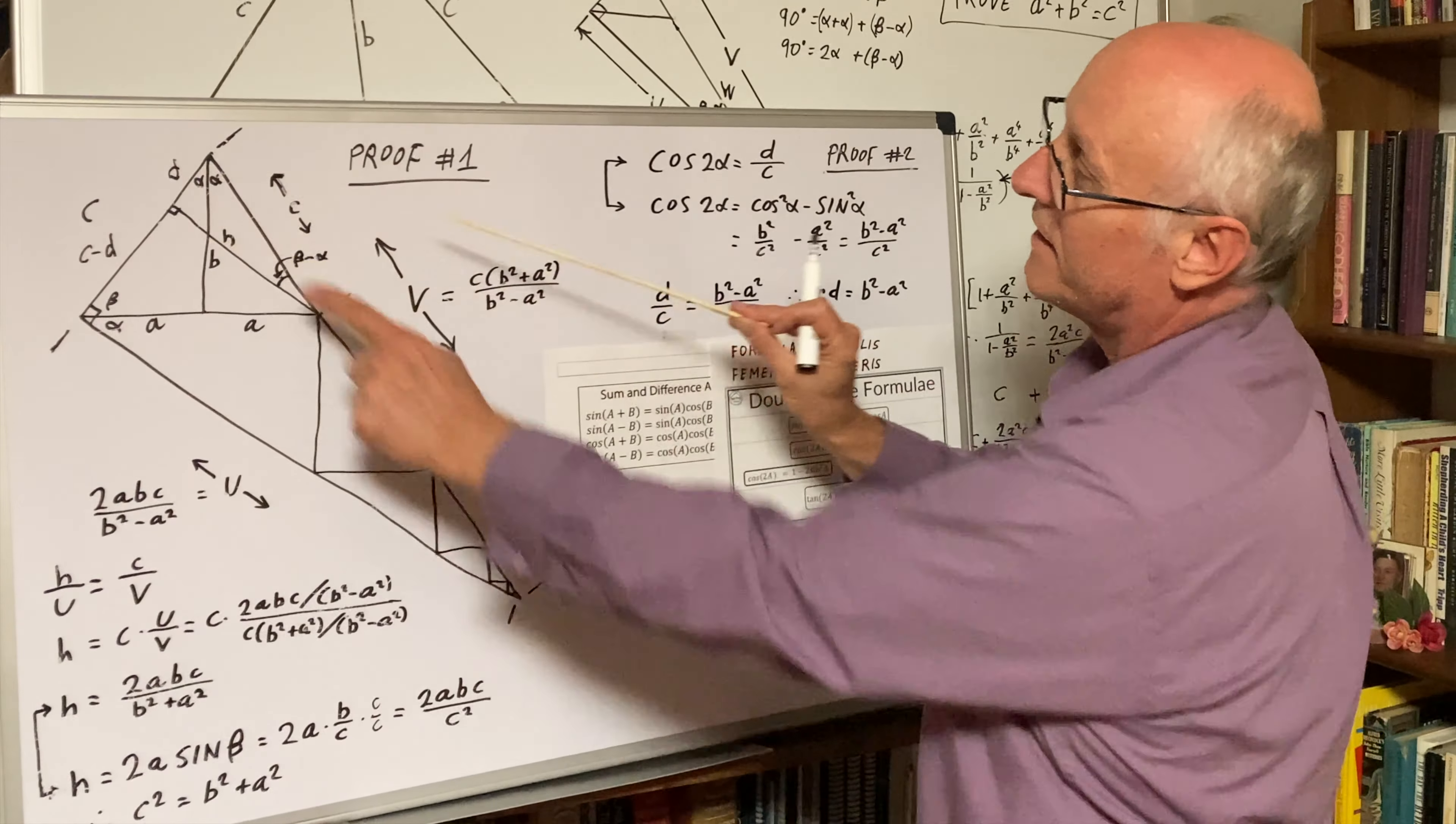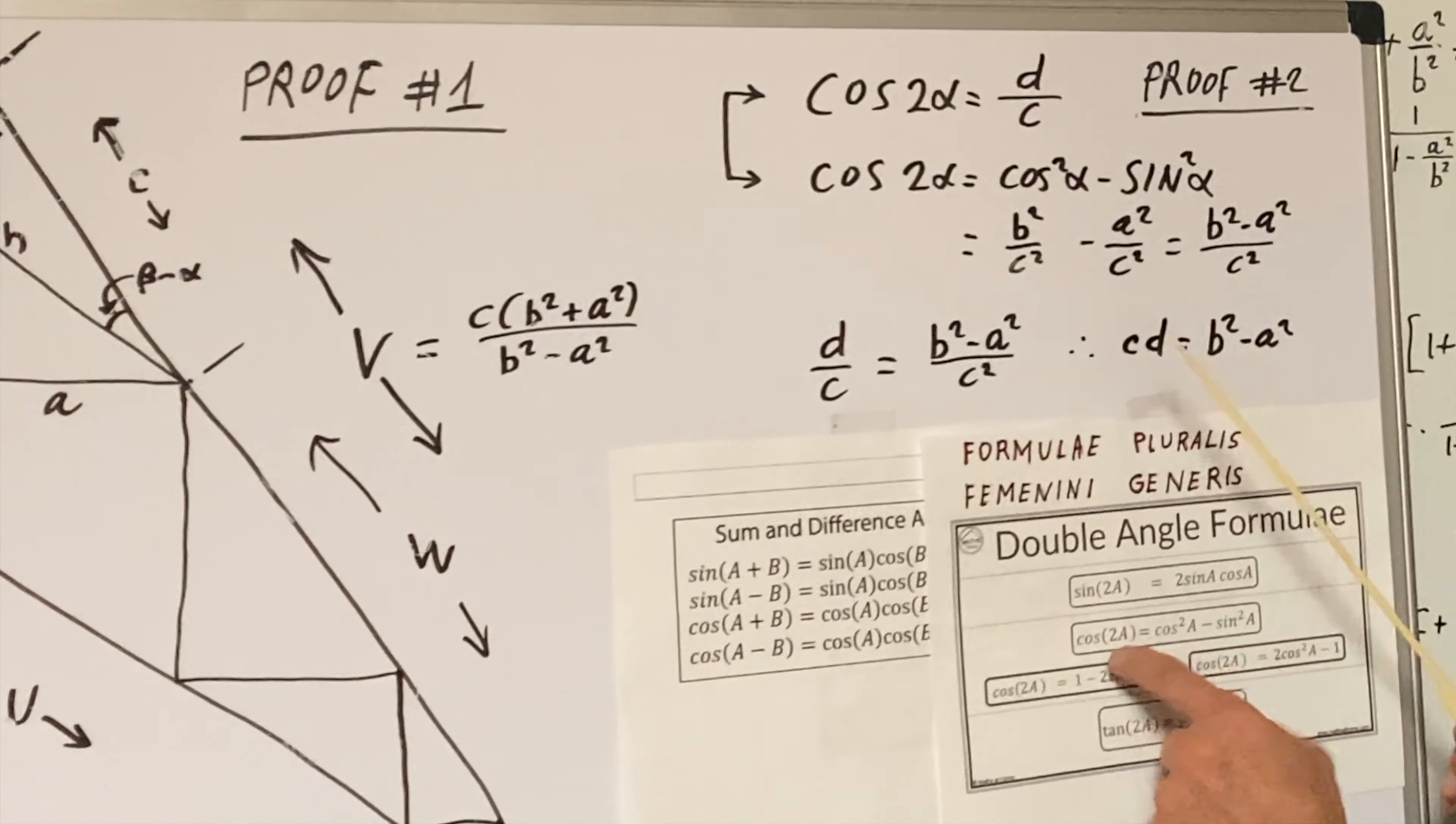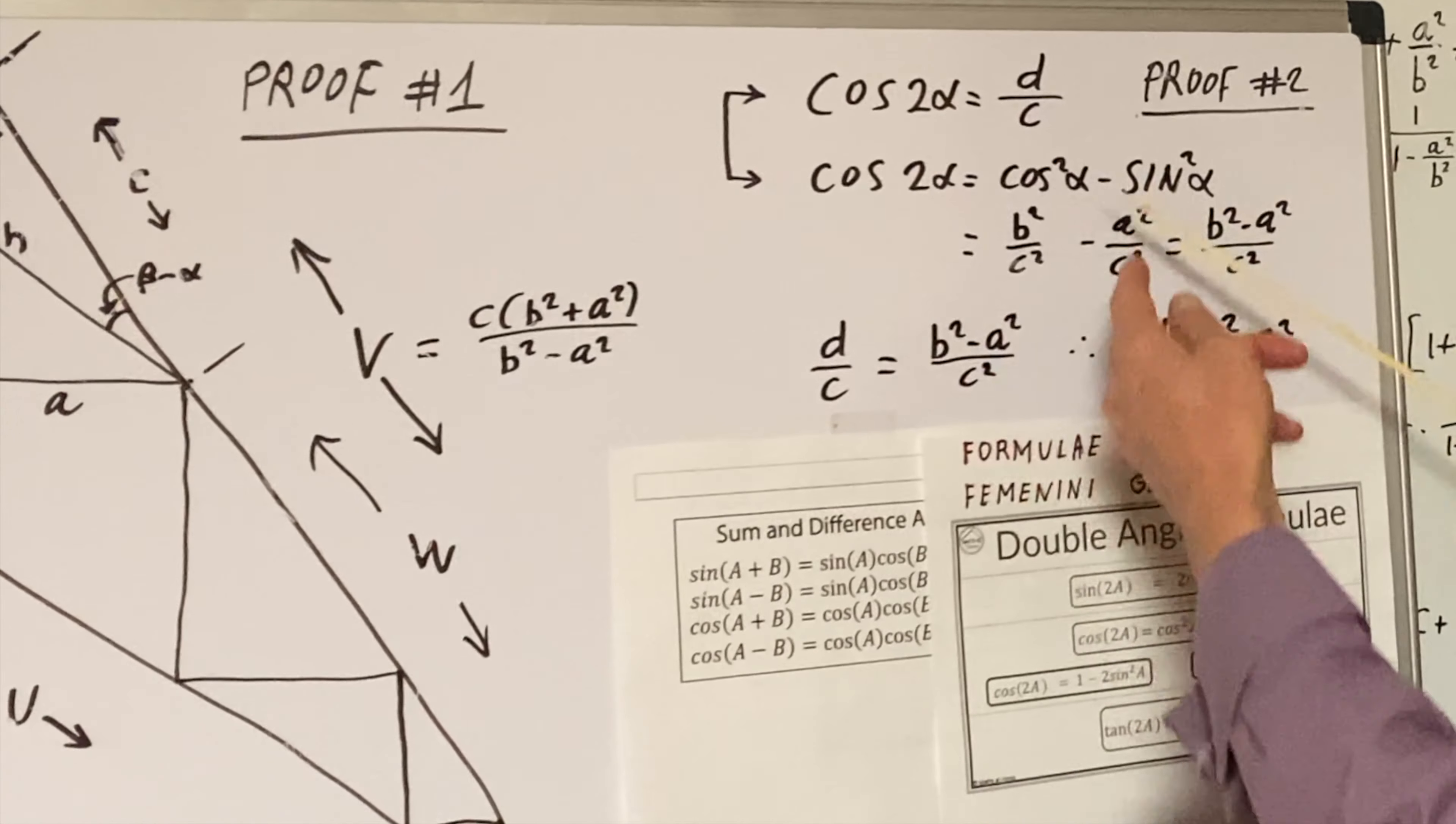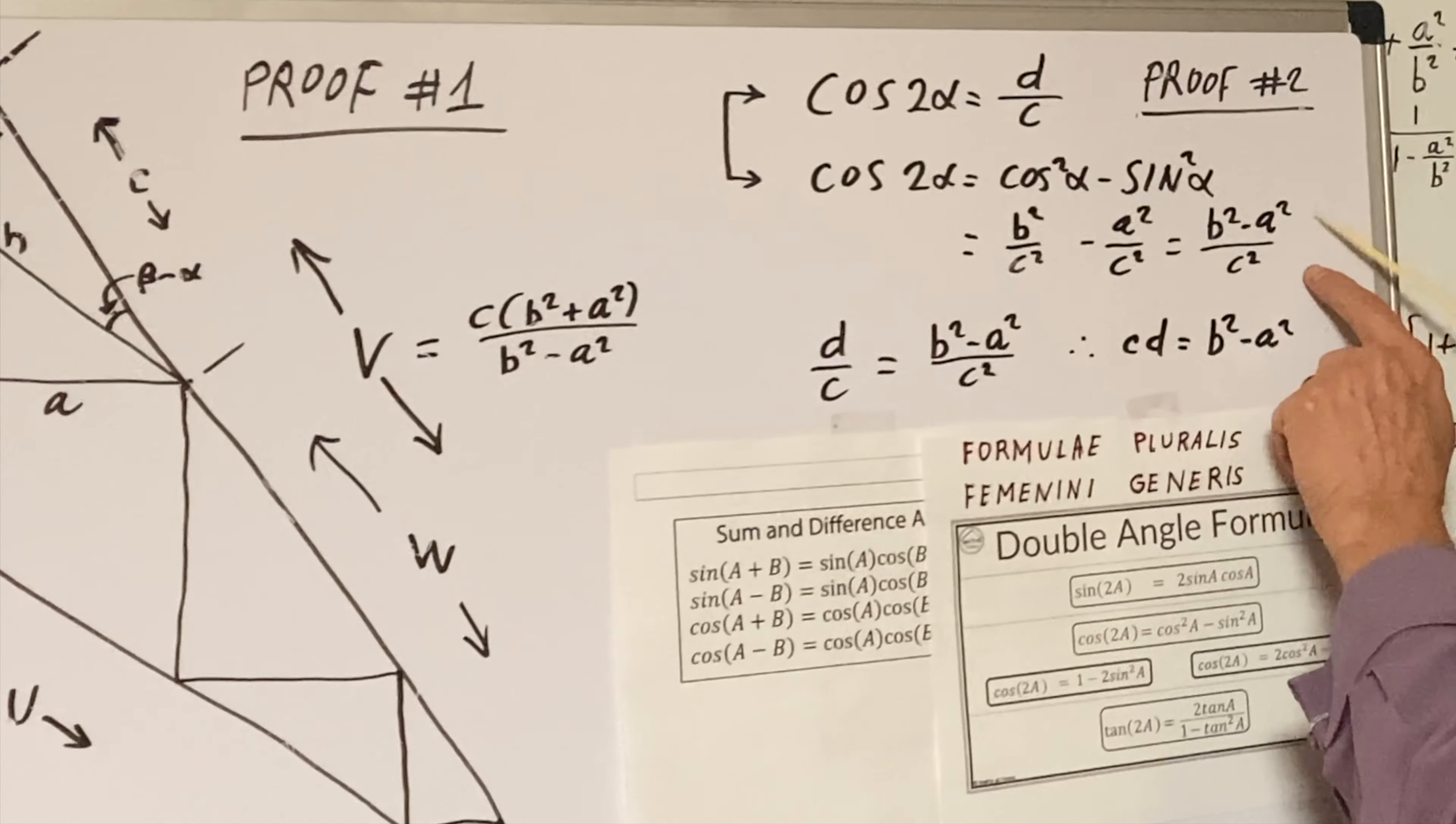It's from this little triangle perspective. Cosine of 2 alpha. Alpha plus alpha is 2 alpha. We can also use the double angle formula for cosine of 2 alpha. That's cosine squared alpha minus sine squared alpha. The basic ratio version of cosine is B over C. So it's cosine squared, B squared over C squared minus A squared over C squared equals B squared minus A squared over C squared.